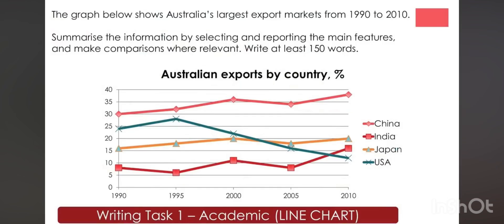For example, the graph below shows... You start to write like this: the line graph describes Australia's biggest export market between 1990 to 2010. Okay, now how can you write this the best way? Let's see. First of all, introduction, overview one, two, three body part paragraphs, no conclusion.